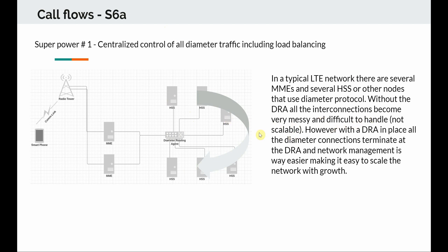Without the DRA, all interactions would become very messy and difficult to handle — it's not scalable. As you add more HSSs you don't want to create individual links; you would rather have a centralized element that handles all of that. The DRA is a great place to terminate all incoming connections and you can use it for distribution like load balancing. As soon as the request hits the MME it hits the DRA, and the DRA can have a round-robin load balancing logic where it distributes load across the different HSSs in a very scalable manner.